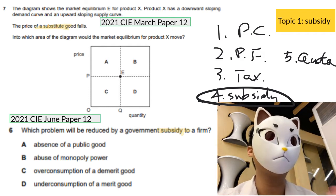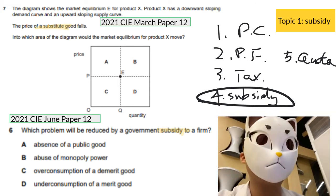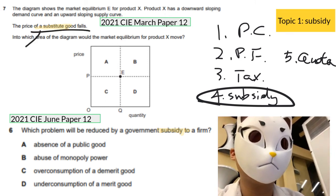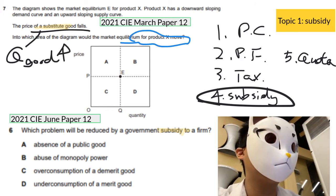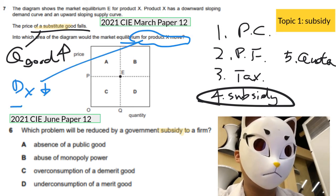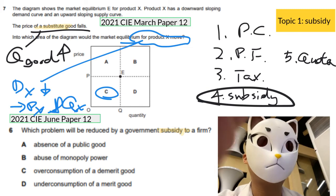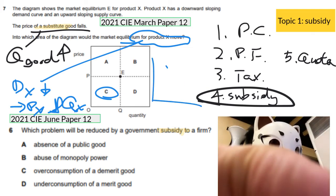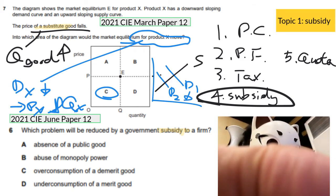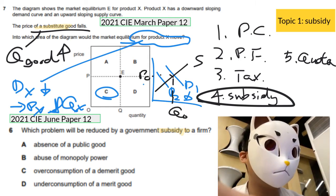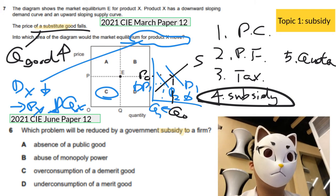Let's go through the effects of a subsidy using two questions. For the first one: if the price of substitutes falls, the quantity demanded of that particular good rises. The demand for product X would drop, so the price and quantity of X would drop. If we draw a diagram, both price and quantity would drop, so the answer goes to C.